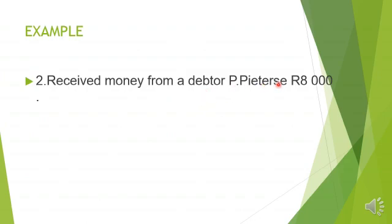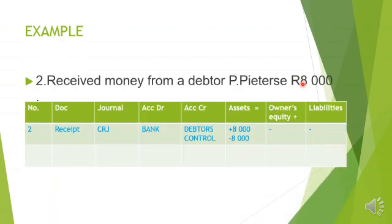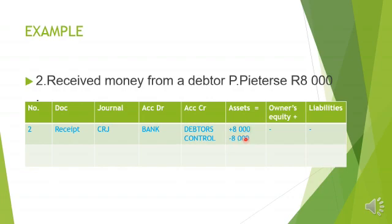Next example: Peter, a debtor, has come to pay the R8,000 he owed. Only two accounts are affected. Transaction number two — source document is a receipt, journal is the CRJ. Bank is debited because money received is put in the bank, increasing that asset. Debtors' Control is credited because what we are owed decreases. Both are assets, so: assets increase plus R8,000 and assets decrease minus R8,000. Nothing happens to Owner's Equity or Liabilities.